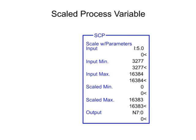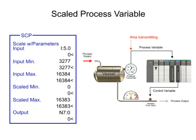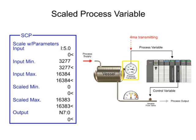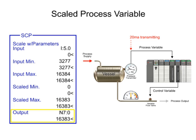For example, when the minimum pressure of 0 PSI is measured, a scaled value of 0 is transferred to the SCP output, and when 100 PSI is measured, a scaled value of 16,383 is transferred to the SCP output.